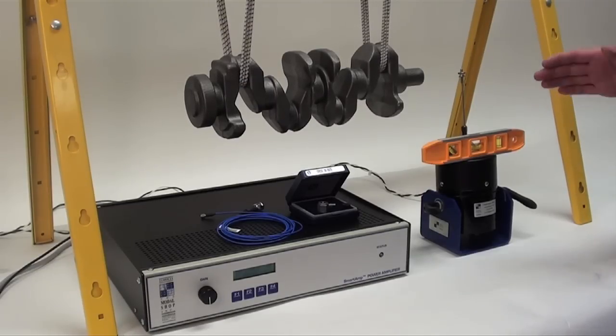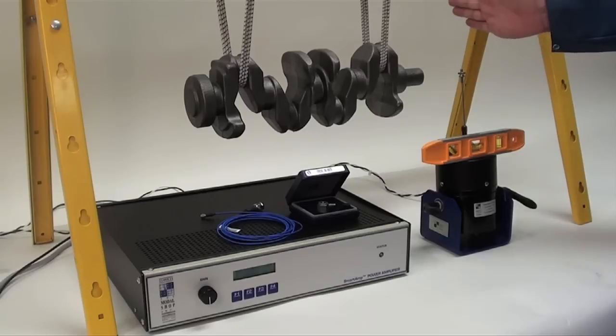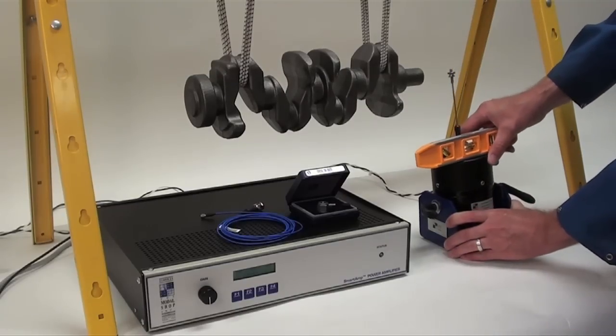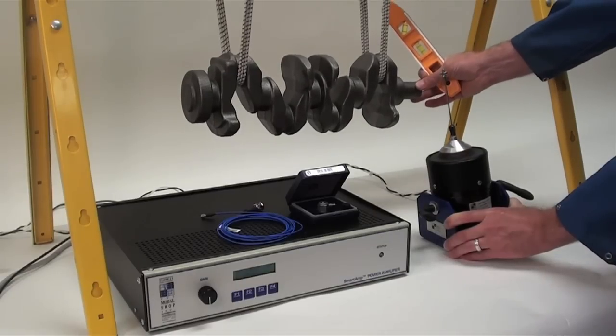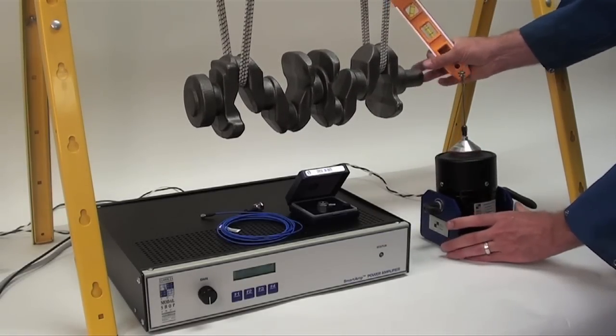So that means that when we excite the test article, we're more likely to get the orthogonal directions that we're interested in. It will be exciting along predetermined axis, as opposed to having the shaker canted at some angle and the crankshaft at a different angle. So we'll get everything leveled up.